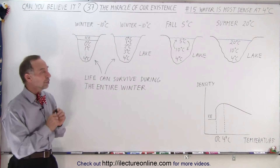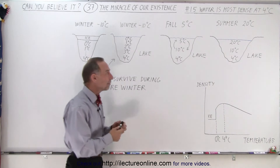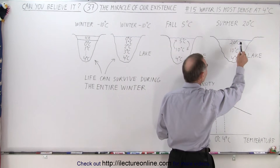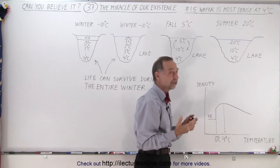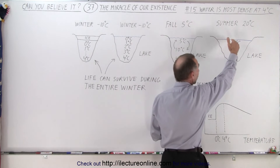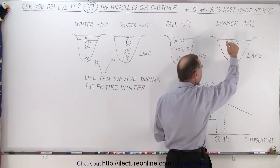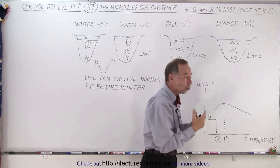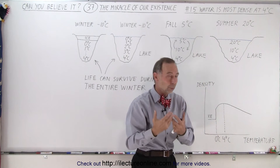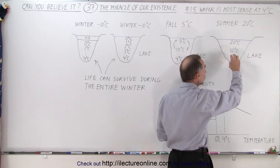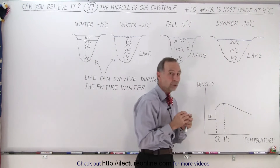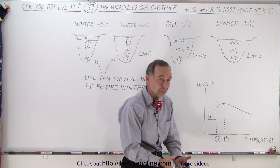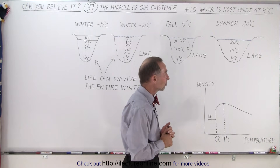So what happens during the year? Let's say we have a lake in summertime at 20 degrees Celsius outside, so the top layer of the water is 20 degrees Celsius. Below that the water gets colder and colder, going down to 15, 10, 5 degrees Celsius, and as water becomes cooler it becomes more and more dense. Eventually at the very bottom you will find the most dense water, which is at four degrees Celsius. If it's a deep lake, the water at the bottom will have a temperature of about four degrees Celsius.